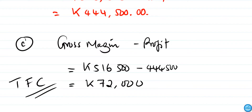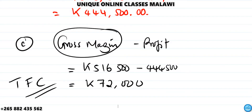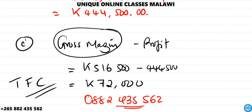The importance of calculating gross margin is to identify a profitable enterprise — it is the easiest way of identifying profitable enterprises. If you have enjoyed this video, don't forget to subscribe to my YouTube channel and like my Facebook page, Unique Online Classes Malawi. You can also join on WhatsApp for any questions in any subject. Thanks for watching and I wish you all the best.